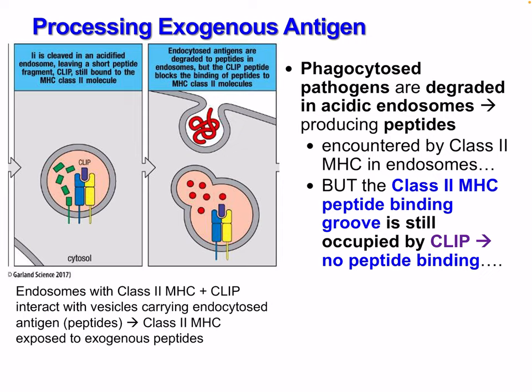Phagocytosed pathogens are degraded in acidic endosomes producing peptides. These are encountered by class 2 MHC in the endosomes, but the class 2 MHC binding groove is still occupied by CLIP — so there is no peptide binding yet. The invariant chain is cleaved in the acidified endosome, leaving a short peptide fragment with CLIP still bound to the MHC class 2 molecule. The endocytosed antigens are degraded to peptides in the endosomes, but CLIP blocks the binding of MHC class 2 to antigen.